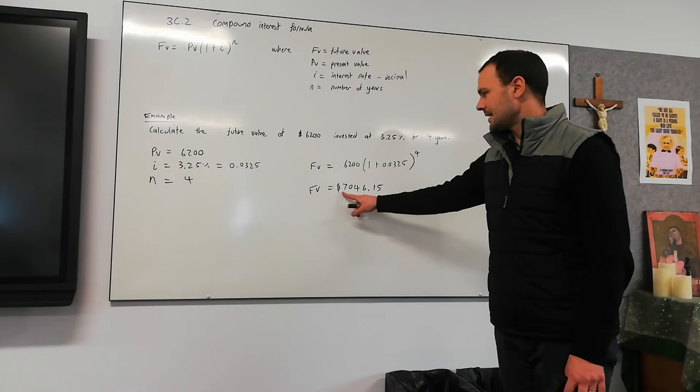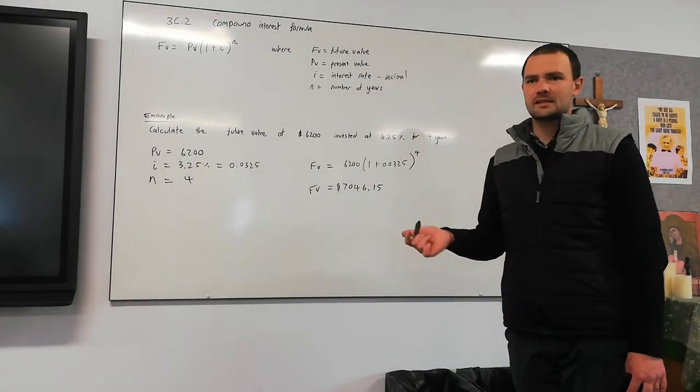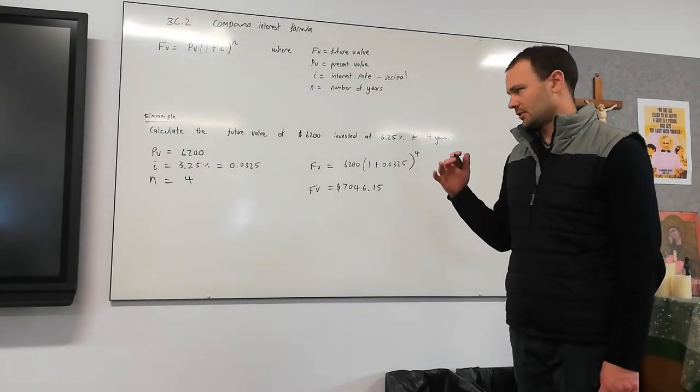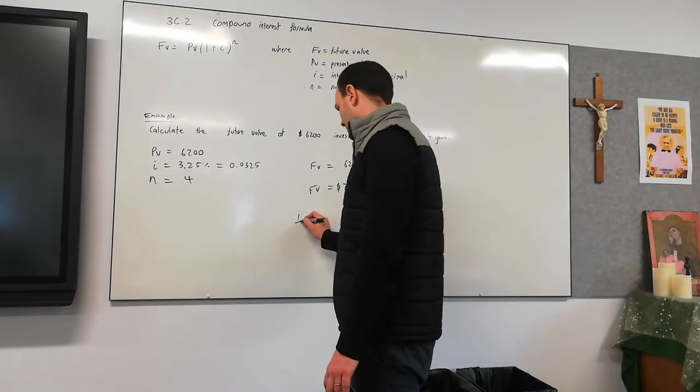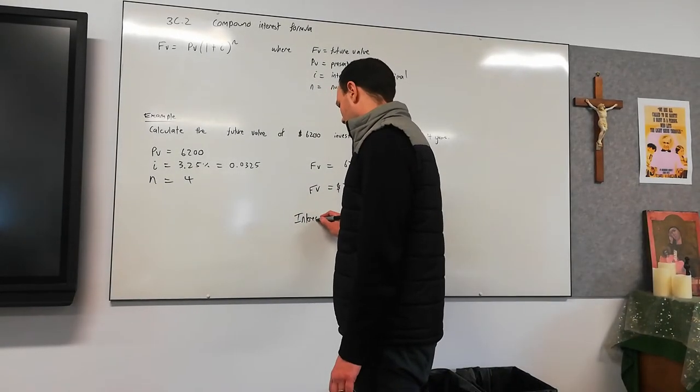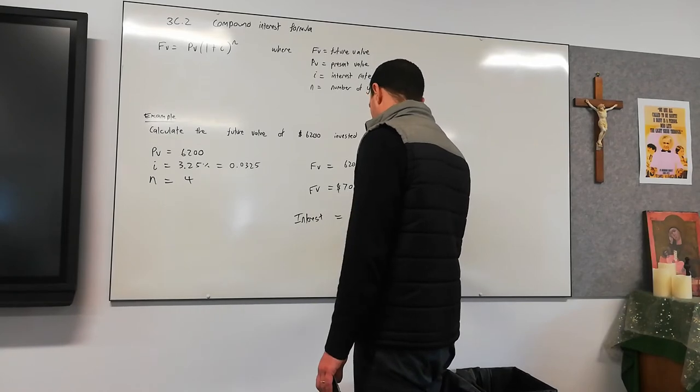Now, that's the future value of the investment. Some of the questions might ask how much interest was earned. The interest earned is going to equal the future value minus the present value.